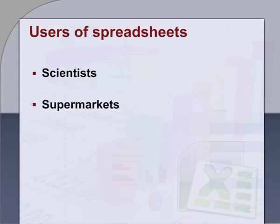Sixth, supermarkets. Supermarkets use spreadsheets to keep track of finances — that is, sales, losses, and money spent. They also use spreadsheets to work out queuing times and what are the best number of checkouts to have open at any one time during the day. Depending upon seasons and sales details of last year, what all types of offers to declare, etc.